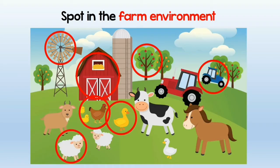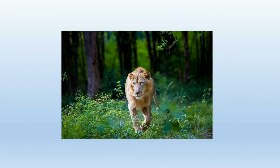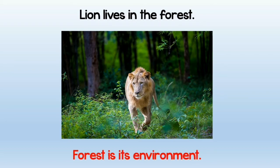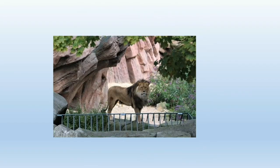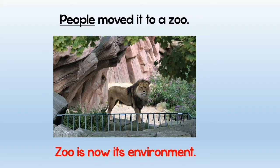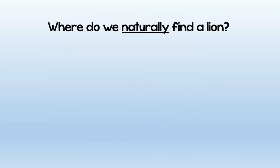So it's not just the living things but all the things around you. Now look at this example — the lion lives in the forest and the forest is its environment. What happens next? People take the lion and move it to a zoo. The new environment for this lion is now the zoo. Remember that environment is the place around the animal.